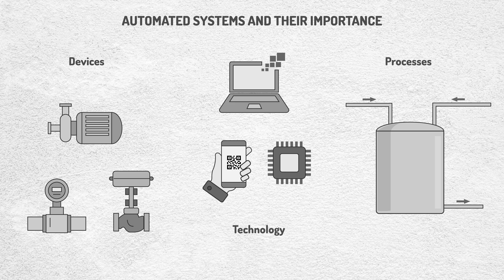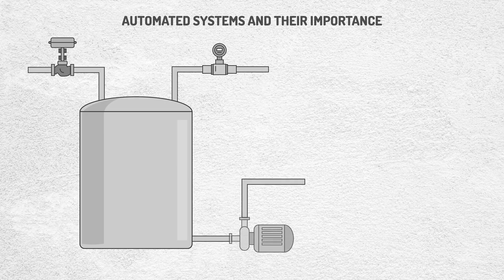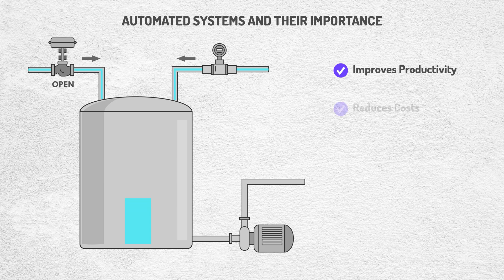But why is automation so important? Here are some key reasons. It improves productivity: by automating repetitive tasks, the speed and accuracy of processes are increased. It reduces costs: it minimizes material waste, downtime, and operational expenses.